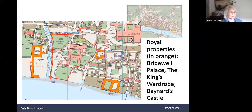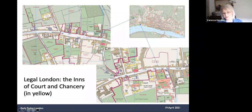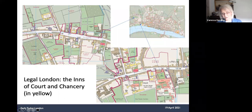An important development in late medieval England was the growth of the legal profession and of the volume of business at the central law courts at Westminster. The Inns of Court, located between the city and Westminster, served both as a training ground for would-be lawyers and government servants and a finishing school for gentlemen. Gray's Inn, Lincoln's Inn and the Temple were complemented by several Inns of Chancery, establishing a legal quarter to the west of the city that survives to this day.